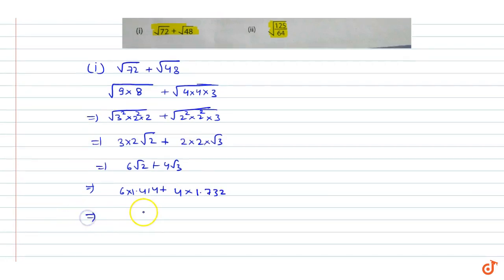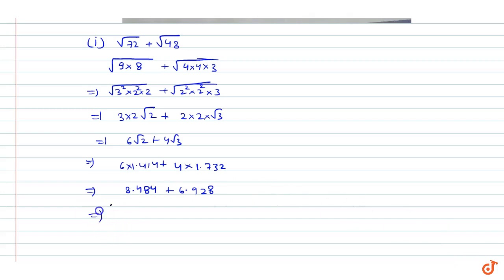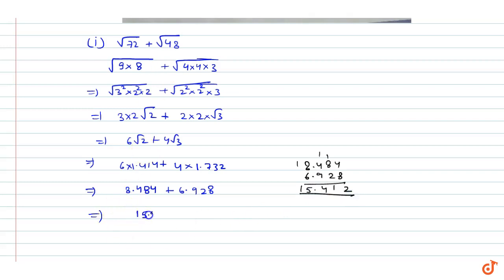Multiplying out, we get 8.484 plus 6.928. Adding these: 8 plus 4 is 12, 9 plus 2 is 11, 5 plus 9 is 14, carry forward — giving us 15.412. This is our solution for the first part.